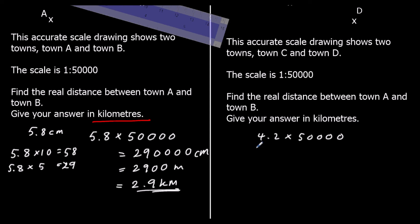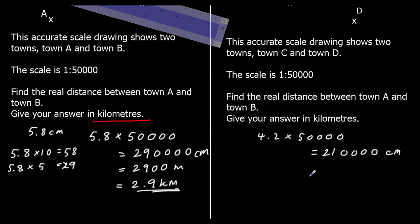4.2 times 5: 4.2 times 10 is 42, half of that is 21. So we have 21 and then four zeros, giving 210,000 cm in real life. Dividing by 100 gives 2,100 meters, and dividing by 1,000 to change to kilometers gives 2.1 kilometers.